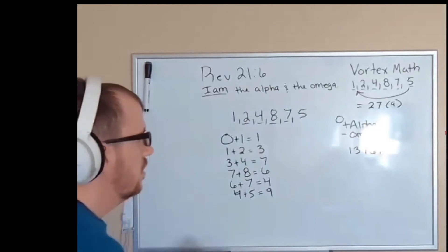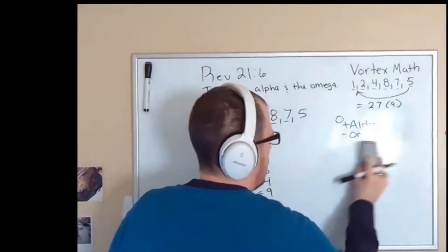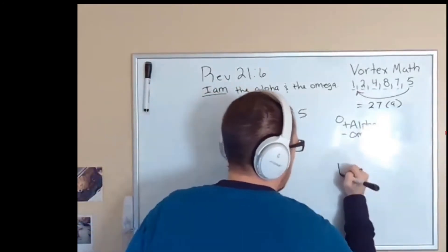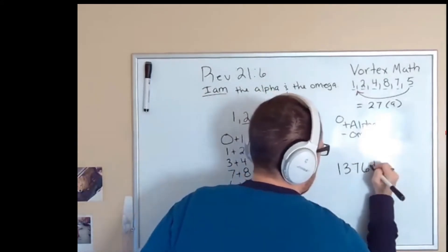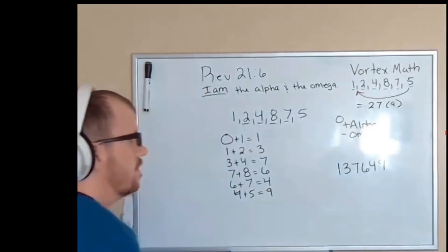So the alpha, I'm going to write it right here, is one, three, seven, six, four, nine.